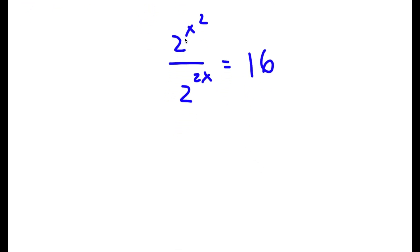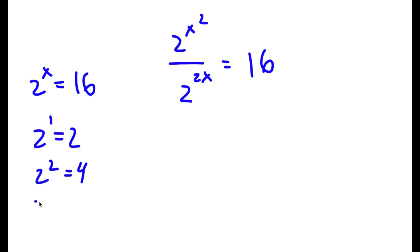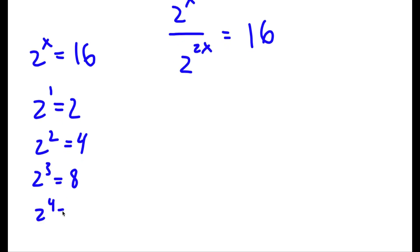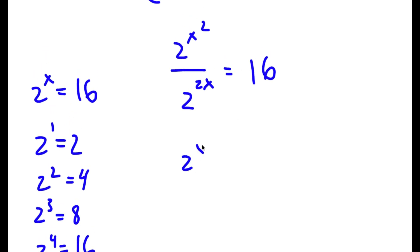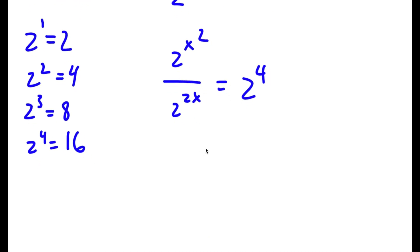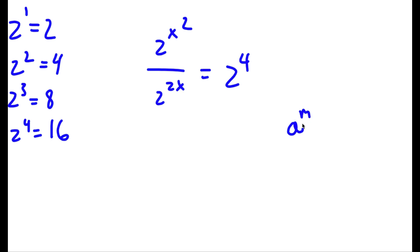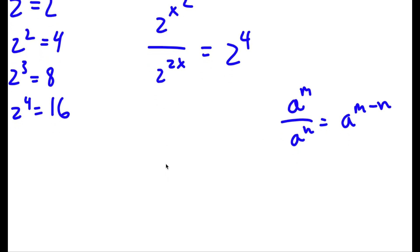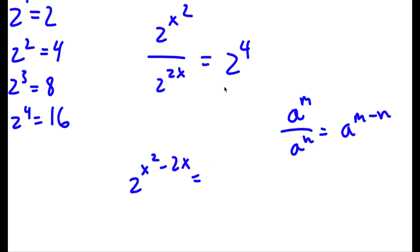Now, as you can see, both our bases for both these terms are 2. So I'm going to convert 16 into a term that has a base of 2. So in other words, 2 to the power of what equals 16? Well, 2 to the power of 1 is 2, 2 to the power of 2 is 4, 2 to the power of 3 is 8, and 2 to the power of 4 is 16. So I'm going to change 16 to 2 to the power of 4. Now all our terms are in bases of 2. Using the rule a to the power of m over a to the power of n equals a to the power of m minus n, 2 to the power of x squared over 2 to the power of 2x equals 2 to the power of x squared minus 2x, which is equal to 2 to the power of 4.